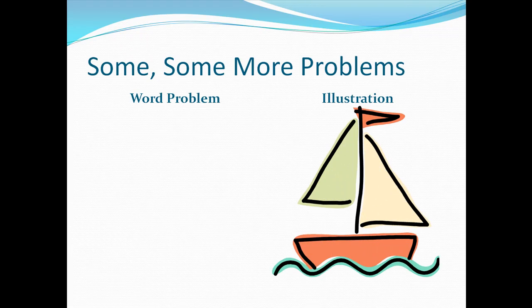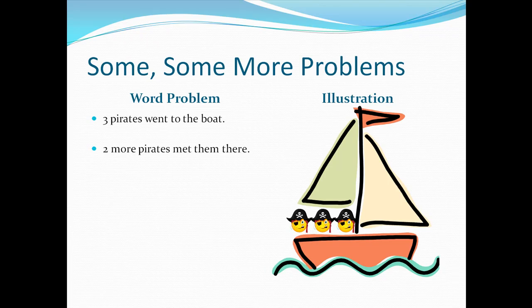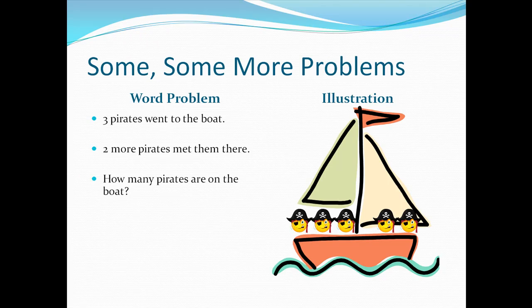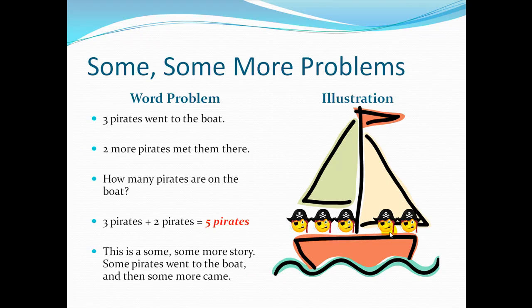First we'll work with some, some more problems. In our first problem, we can see that there are three pirates already on board the boat, and then two more pirates met them there. So how many pirates are on the boat now? I can count five pirates on the boat. Our number sentence would say three pirates, because that's what we started with, plus two pirates — that's some more — equals five pirates total. This is a some, some more story. There were some pirates on the boat, and then some more came along.